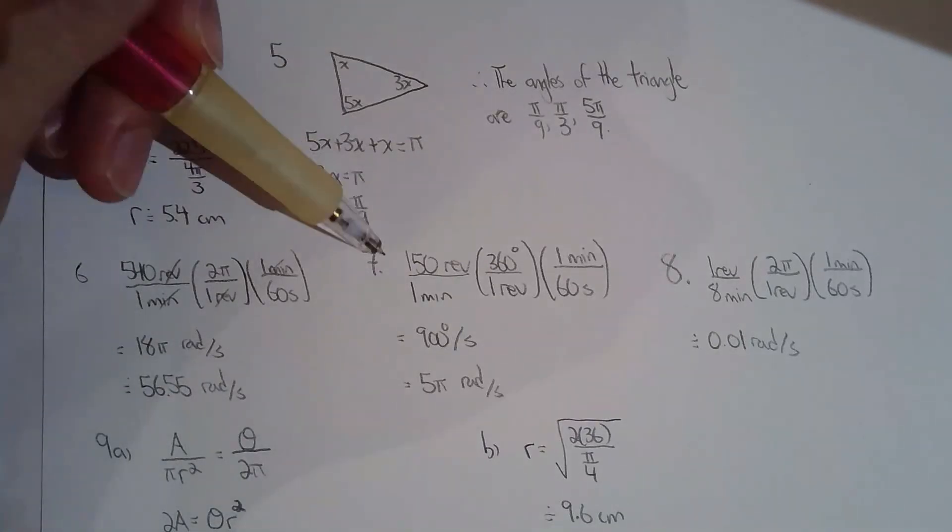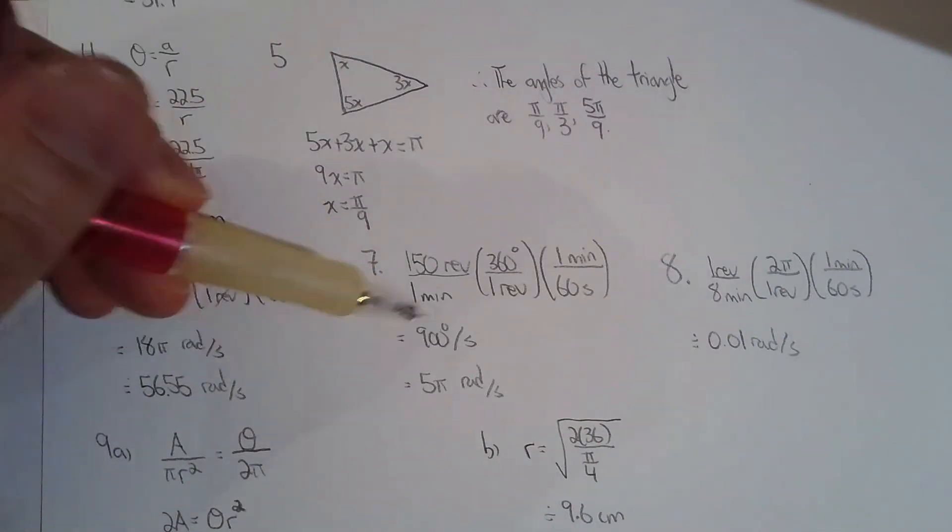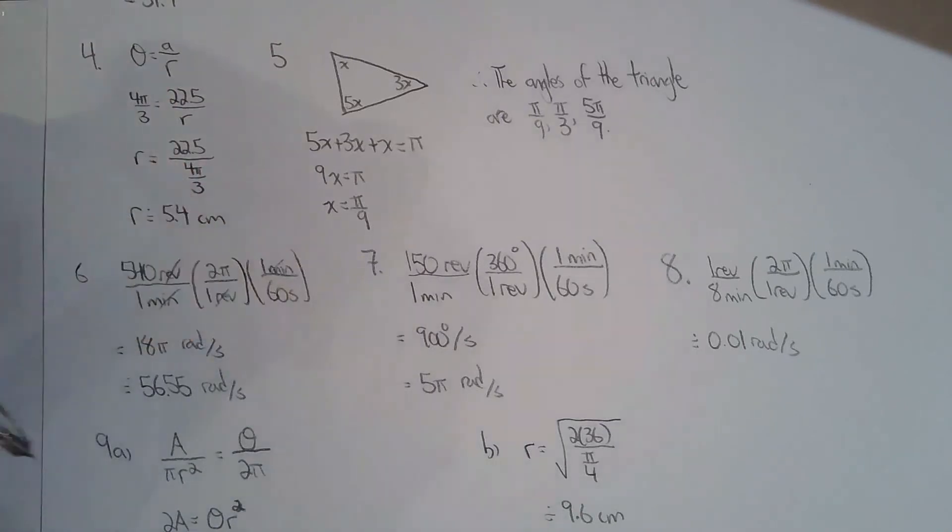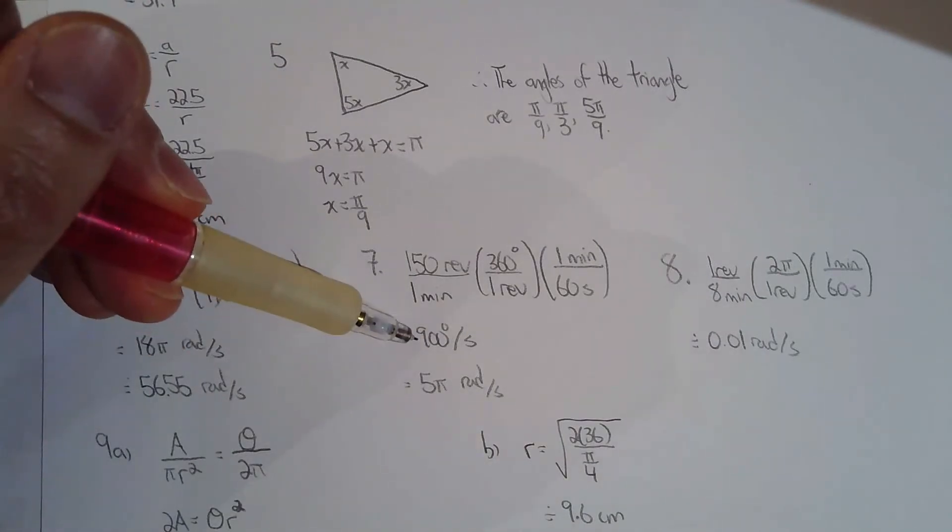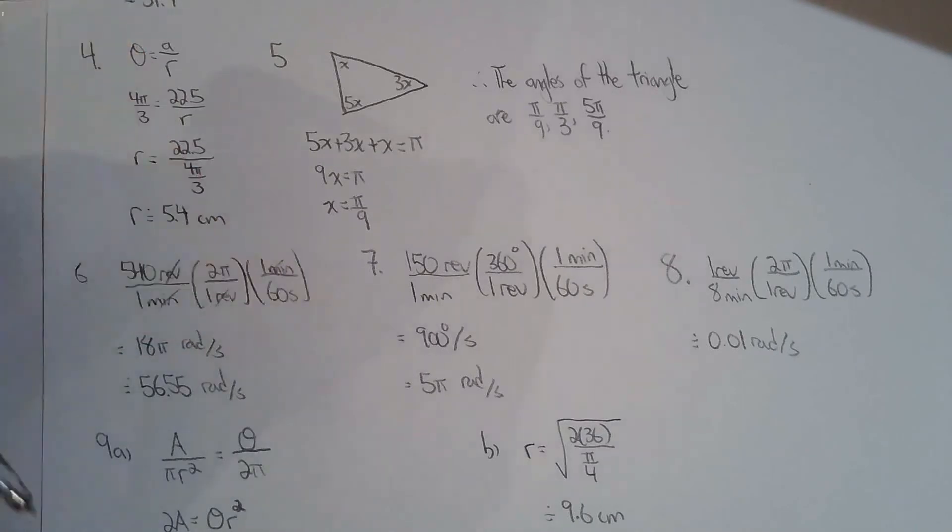For question 7, they want it in degrees per second and radians per second. I found it in degrees per second first, and then I converted 900 degrees to 5 pi. I know that 900 degrees is exactly 5 pi radians, but if you didn't know that, you can do the conversion on the side.